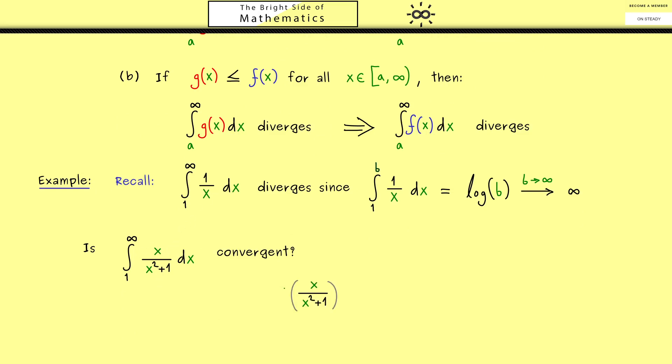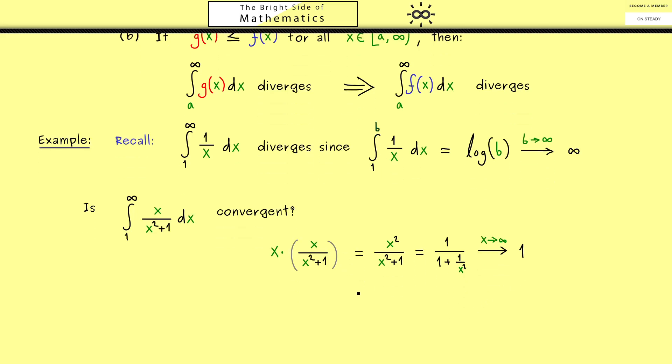And indeed you should see for a very large x this function is almost 1 over x. Or to formulate it more precisely we could say that if we multiply the function with x then we would be able to cancel the x squared. Or in other words we have 1 plus 1 over x squared in the denominator. Therefore if we send x to infinity this whole thing goes to 1. In summary this function here in the limit looks like 1 over x. However of course the limit is not enough we need a concrete minorant function. But the important thing now is that we can construct one.